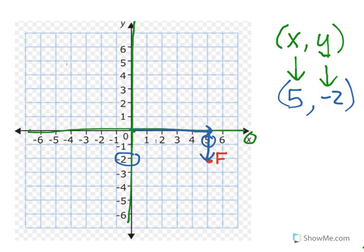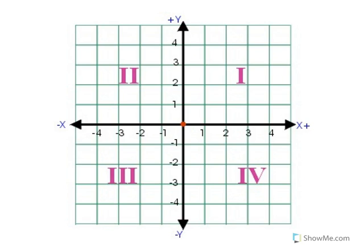Now let's go ahead and talk about the four quadrants now that we've learned how to locate points. Here are your four quadrants: quadrant one, quadrant two, quadrant three, and quadrant four. If you put them in order, you're going to form the letter C. Watch this: quadrant one, two, three, and four. Do you all see the letter C? That is where each quadrant belongs. Now let's talk about a few of the characteristics of each quadrant.